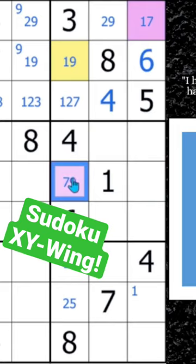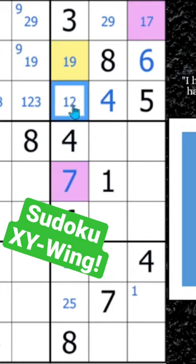Which means there's only one place left for a 7 here in block 6, which is right there, which allows us to eliminate a 7 from this cell and solve a 7, the one remaining possibility in block 3, right there.